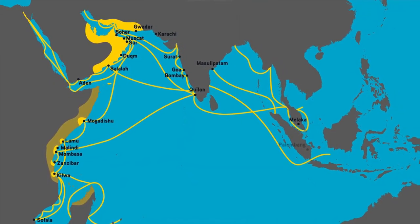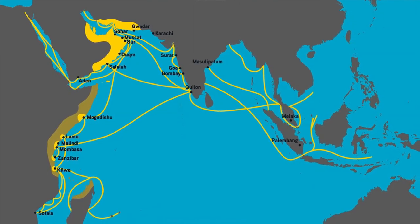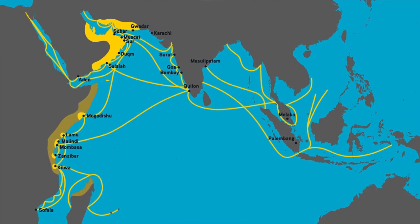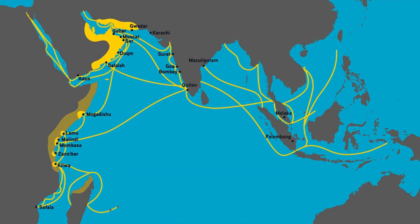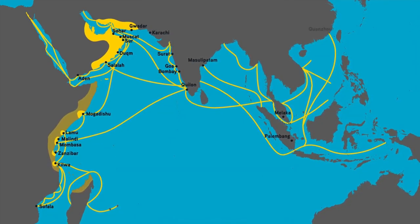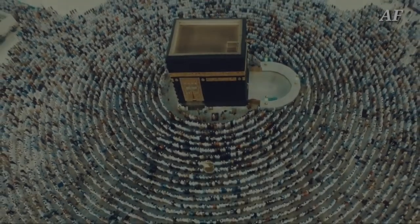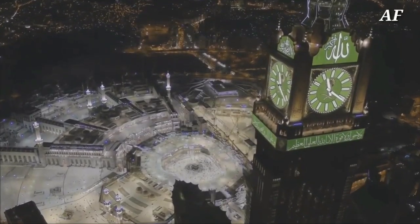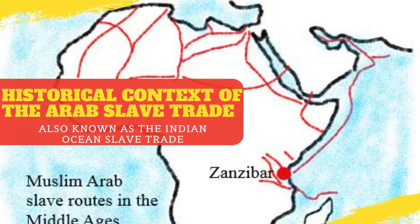How did East Africa and North Africa get entangled in this illicit trade? How did the Zanzibar Revolution and the Bantu revolts in Iraq come into play? And how did this illicit trade thrive in Arabia, with Mecca — the holiest city of Islam — being the epicenter? To understand the Arab slave trade, we must first grasp the historical context.